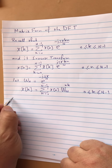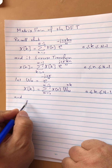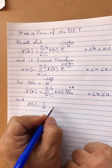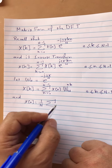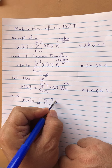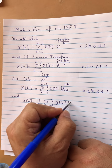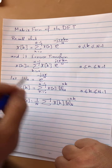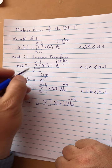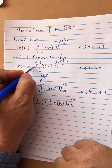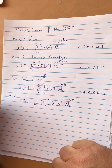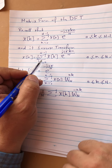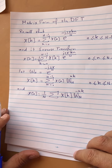And the inverse is x of n equals 1 over N times the summation of X of k times W sub N to the minus n*k. By the way, I missed the 1 over N constant in the earlier expression, so please do not forget it.